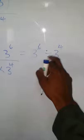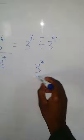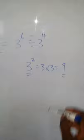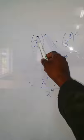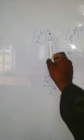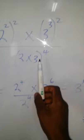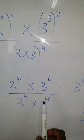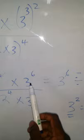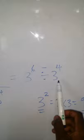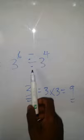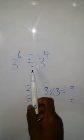The rule of indices says: when you have the same base and you are dividing, you subtract the powers. So three to the power six divided by three to the power four gives three to the power two — that is three times three, which equals nine. When multiplying same bases, you add powers; when dividing, you subtract.